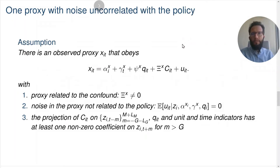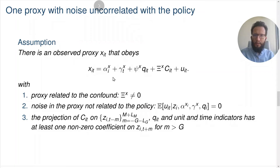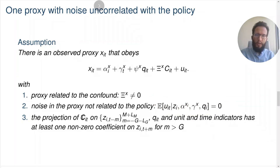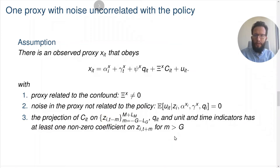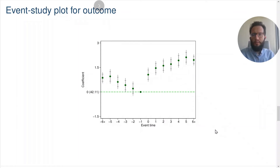The last approach that I'll cover in some detail is the case of one proxy with noise uncorrelated with the policy. We have access to an observed proxy X_IT that obeys this equation right here. Since it has to be related to the confound, this coefficient has to be different from zero. And this is a noisy proxy, but the noise in the proxy is not correlated with the policy. We also need that when we project the confound on the leads and lags of the policy variable for the leads and lags that we include in our event study plot, that projection has at least one non-zero coefficient. Let me tell you how this works through a series of graphs that will portray the intuition behind this approach.